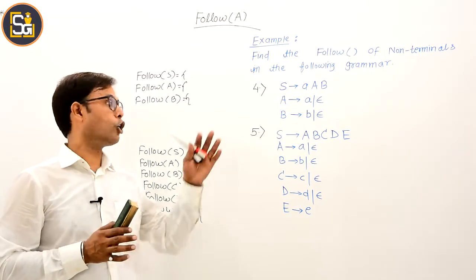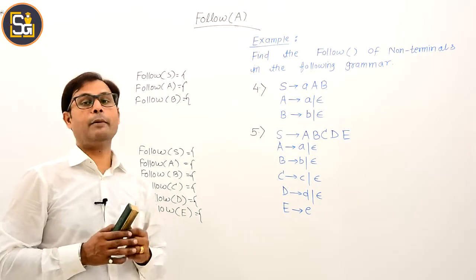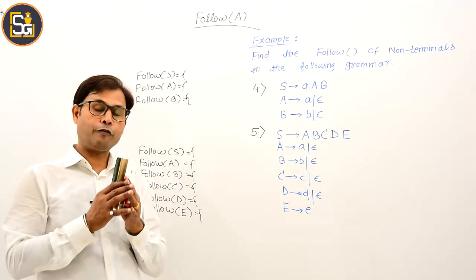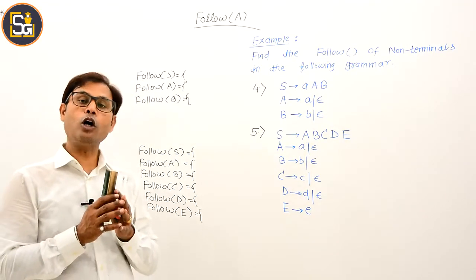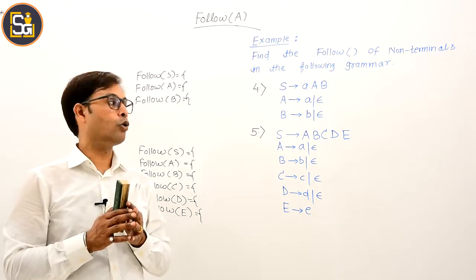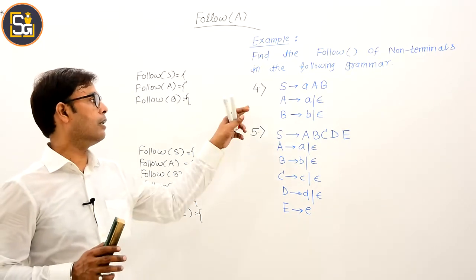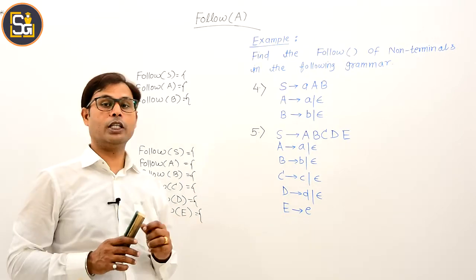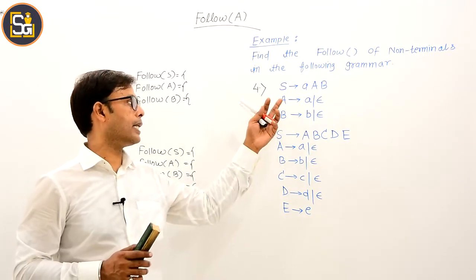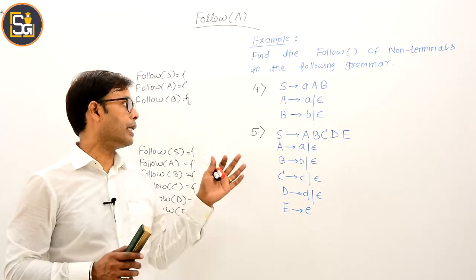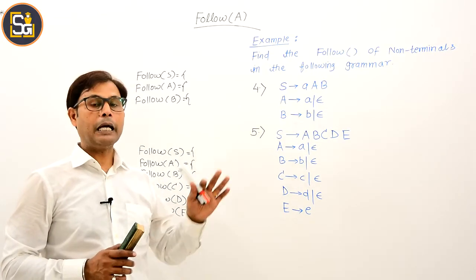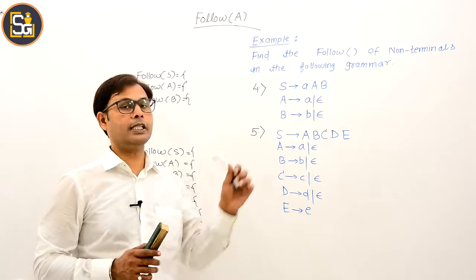Given a context-free grammar, find the FOLLOW of all non-terminals present in the grammar. Consider the fourth question. The non-terminals are capital S, capital A, and capital B. The terminals are small a and small b. Epsilon is also present.